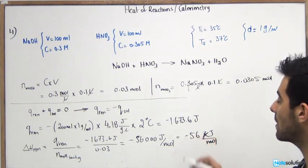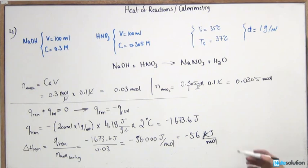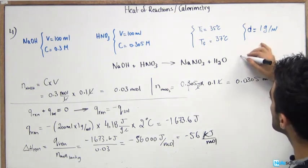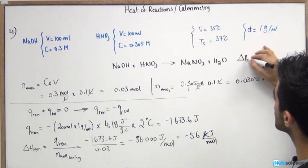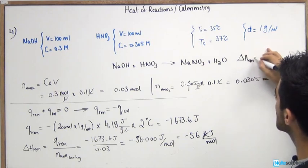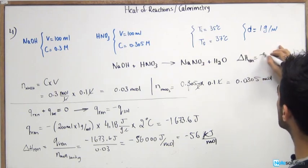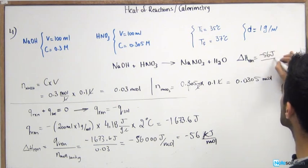So the answer, the final answer that we have for this delta H reaction is negative 56 kilojoules per mole. And you can go ahead and put this here once you're done. So delta H reaction is equal to negative 56 kilojoules per mole.